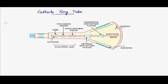Today we will see one of the applications of thermionic emission, and the application is the cathode ray tube. We will understand its construction and how exactly it works. Broadly speaking, a cathode ray tube can be distributed into three segments.